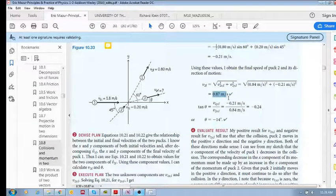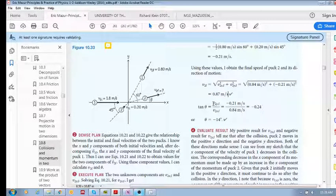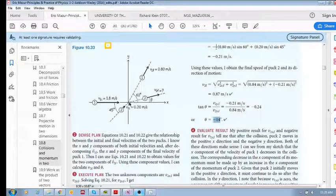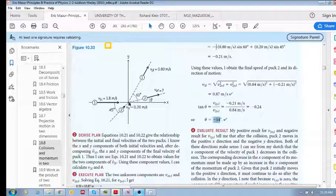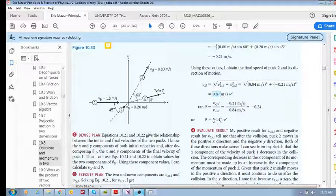And we use tan theta equal to the vertical component divided by the x component to give us that. And the theta is equal to tan to the minus one of that, so we have minus 14 degrees. So our final v2 final is actually pointing down there. It's got a magnitude of 0.87 and an angle of minus 14. All right, cheers.